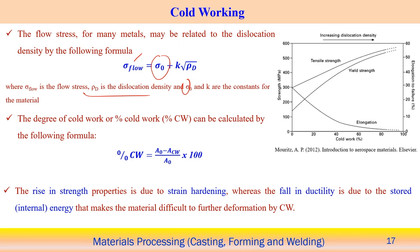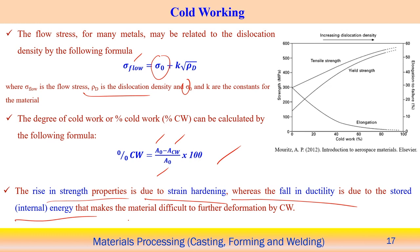The degree of cold work can be calculated using: (initial cross-section area minus deformed cross-section area) divided by initial cross-section area, times 100. The rise in strength properties is due to strain hardening, while the fall in ductility is due to the stored and released energy that makes further deformation in cold work more difficult.